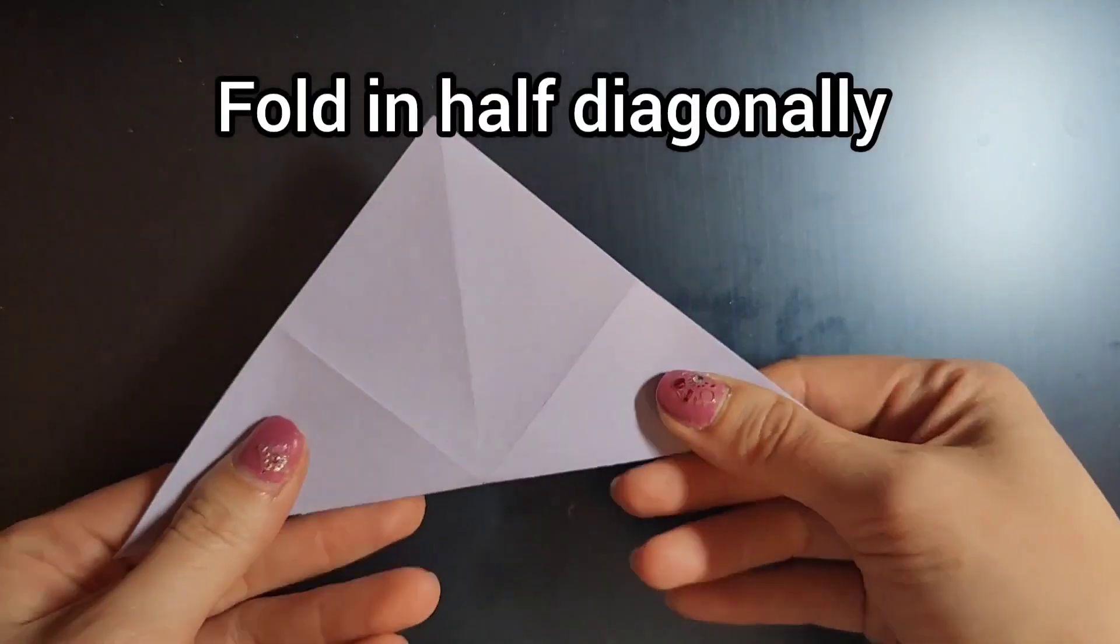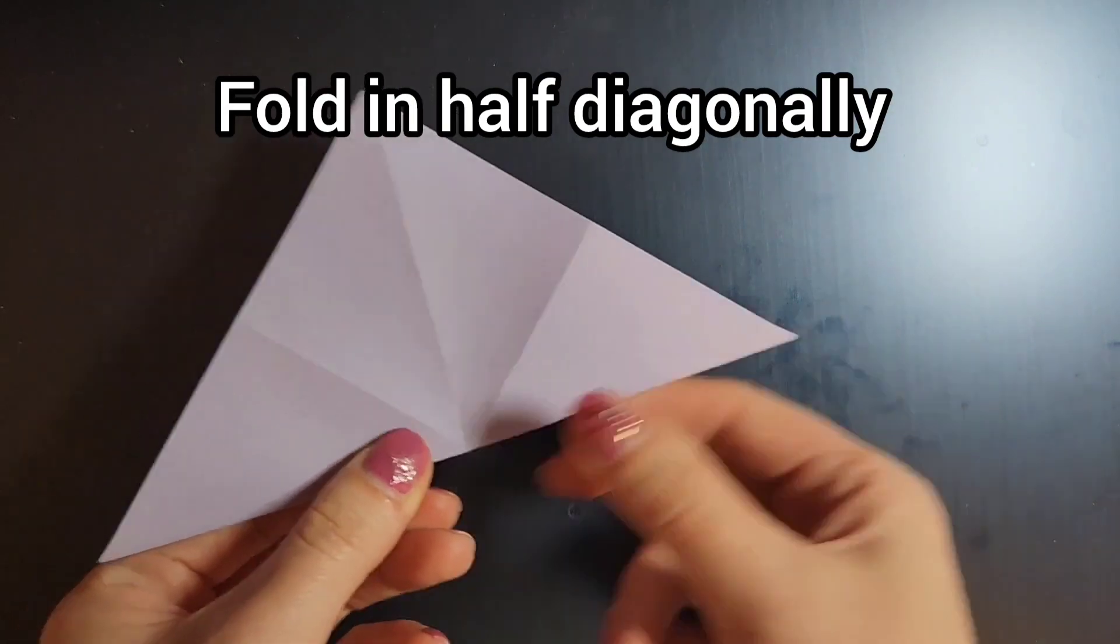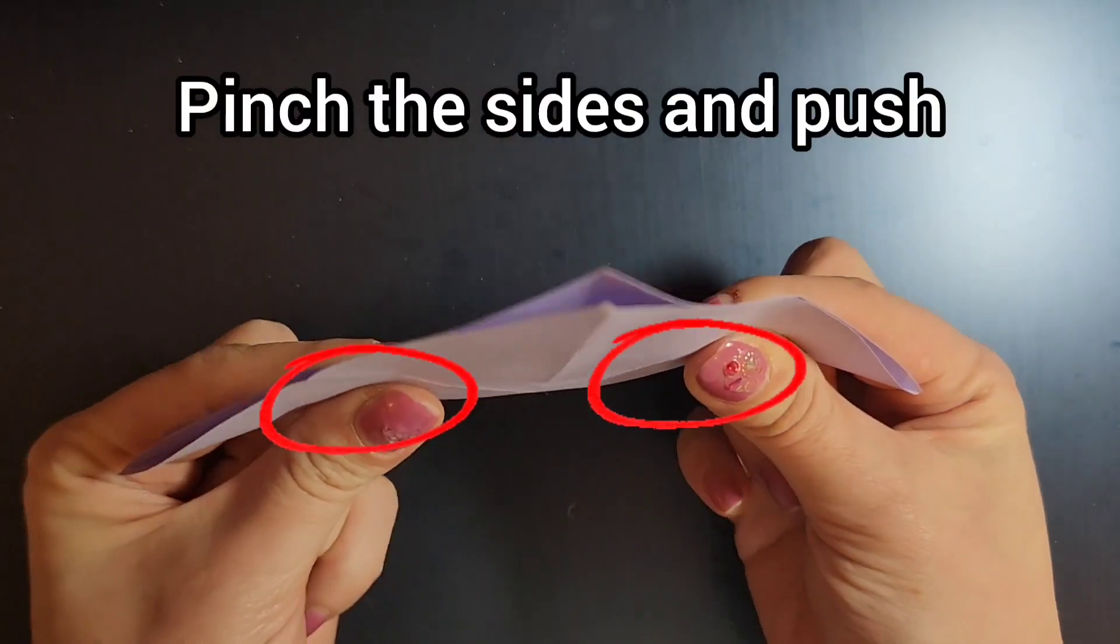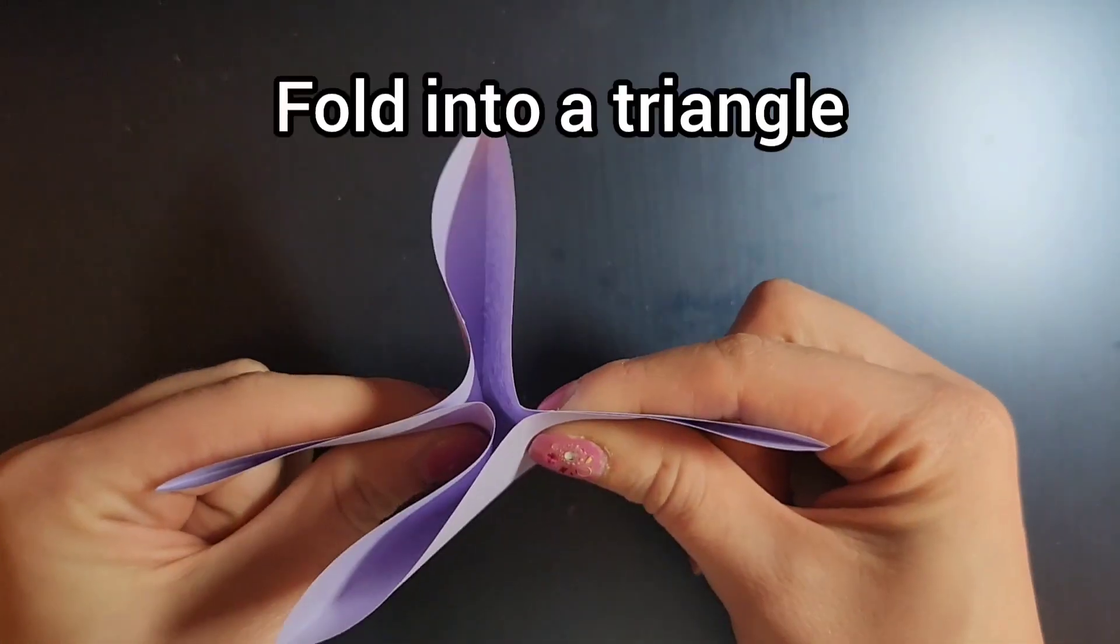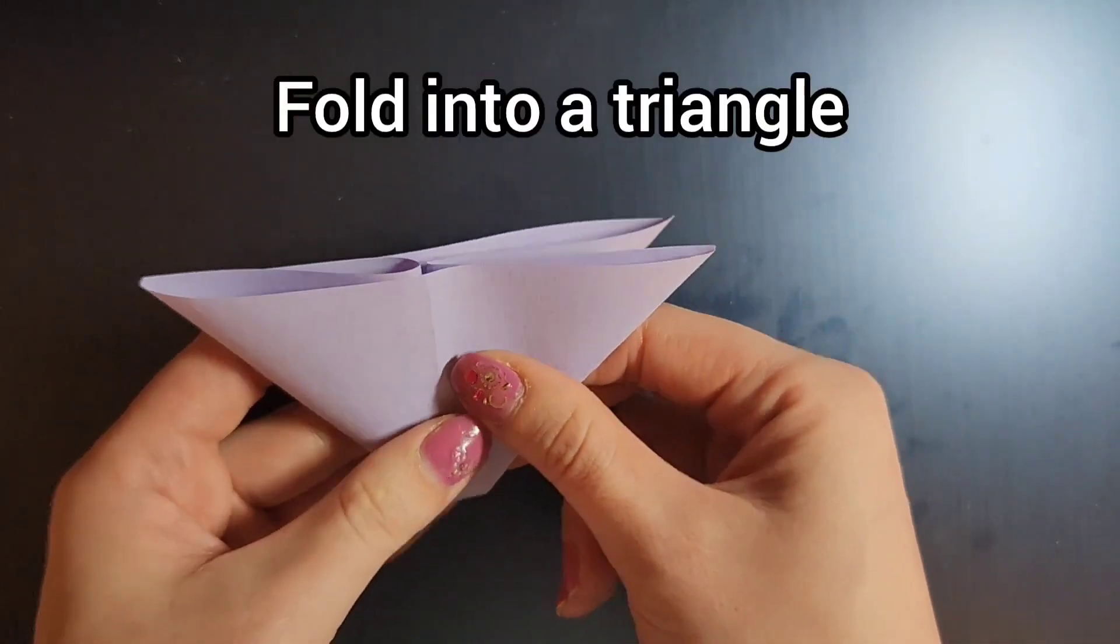Fold it in half diagonally so that it looks like a triangle. Next you'll want to hold the two sides here, pinch them, and push them together. This will make you a different type of triangle.